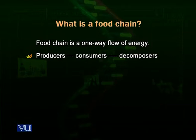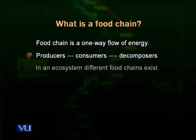If we simply exemplify a food chain, it goes from producers eaten up by the consumers, and consumers eaten up by the decomposers. In an ecosystem different types of food chains exist. This is actually a relationship of eating and being eaten.